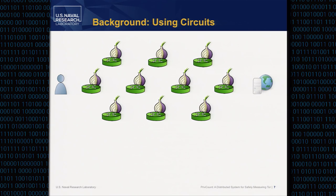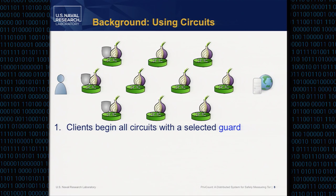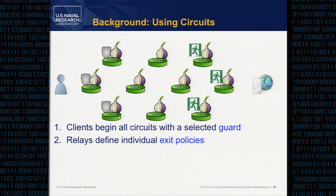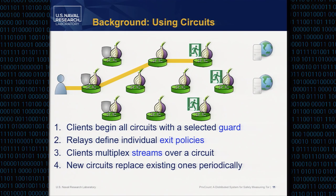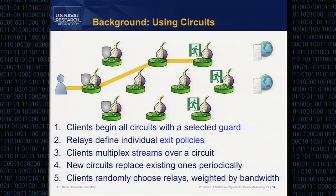A bit more about how clients use circuits. All clients begin their circuits with what's called an entry guard — special relays with specific properties. Clients end their circuits with an exit relay. Exit relays can specify exit policies allowing the client to connect to different types of destinations or ports, such as only allowing port 443. Clients multiplex streams over the same circuit to connect to various destinations, depending on the exit policy. Every 10 minutes, circuits expire and new ones replace them. Clients choose relays weighted by bandwidth capacity to help balance load.